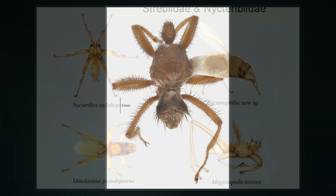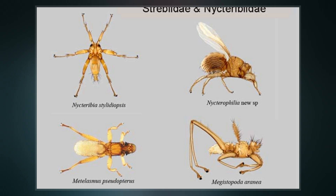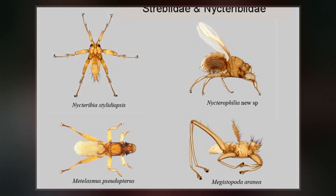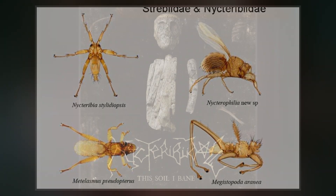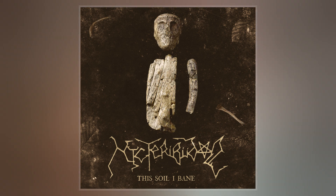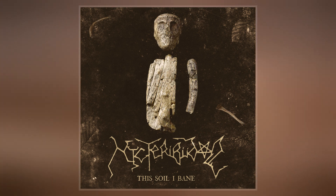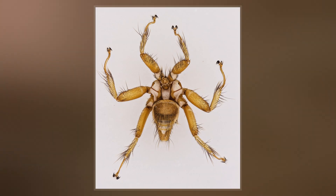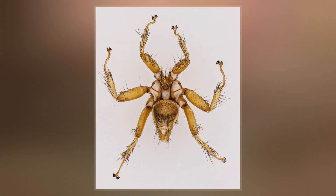One of the key morphological features of Nycteribiidae is their highly reduced compound eyes. Many species contain no visible eyes or only rudimentary eyespots. None of the species contain wings. They have backward-folded legs that resemble those of spiders and a dorsally inserted head.